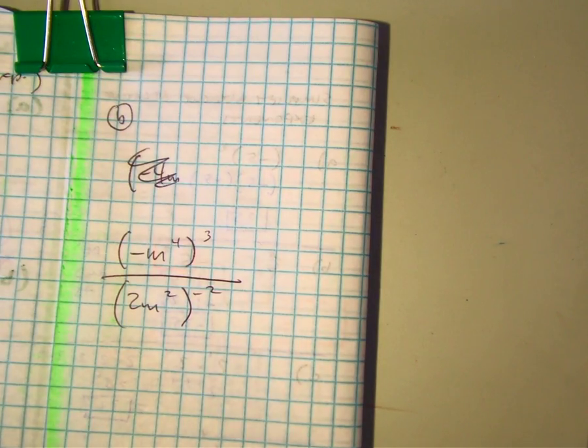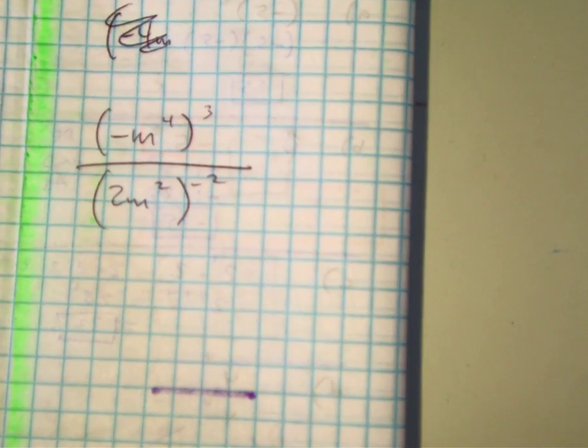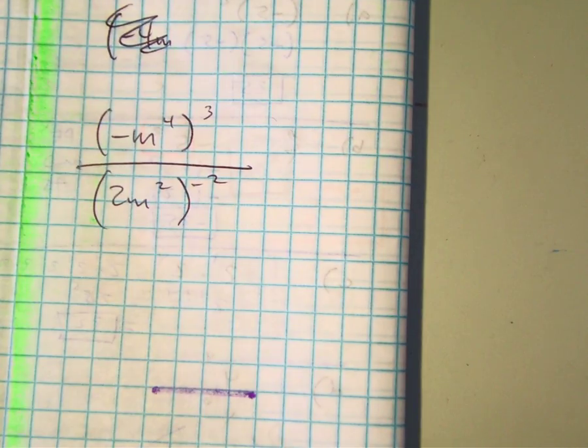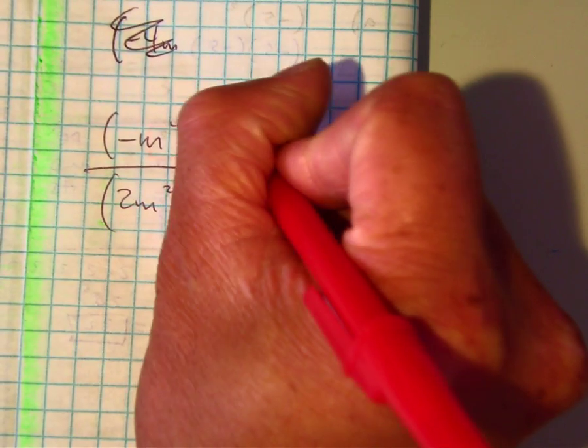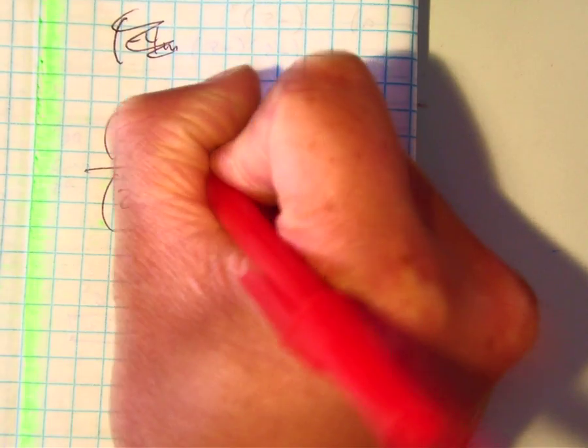Alright, let's go over to letter B. For letter B, there's a couple of ways of doing the problem. If I want to find what I think would be the easiest, I'm going to distribute this exponent to all the other exponents.